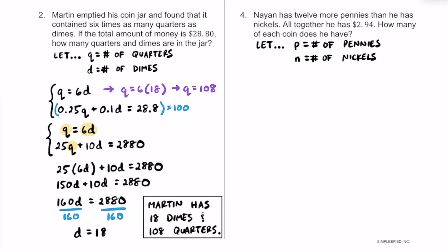We know that 9 has 12 more pennies than nickels. So whatever number of nickels he has, we add 12 to get the number of pennies. For our first equation: P equals N plus 12. You can try some random values for N to verify that the P values make sense.